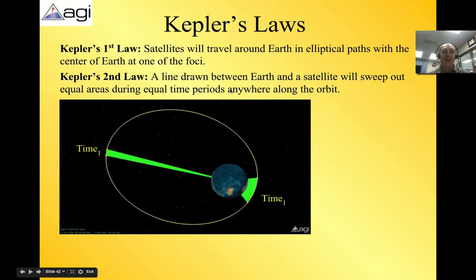Kepler's second law is a line drawn between Earth and a satellite will sweep out equal areas during equal time periods anywhere along the orbit. This one is really cool. So if you have a satellite way out here, remember it's going really slow out here. Remember from that Molniya clip. Really slow. So in a time period of whatever this is, maybe this is 40 minutes. It'll be here 40 minutes later, it's here. If we find the area of this green slice and then we compare here.